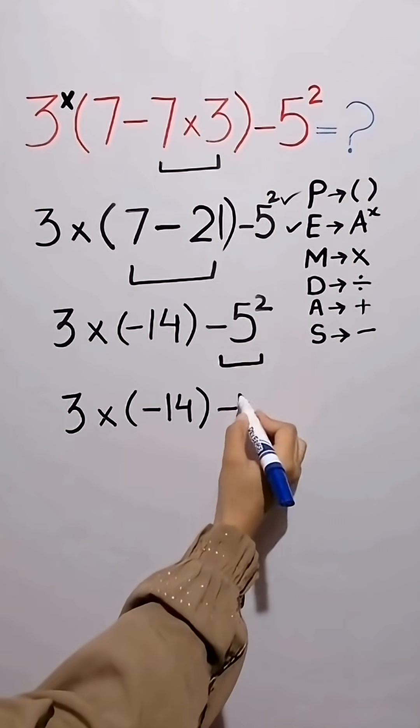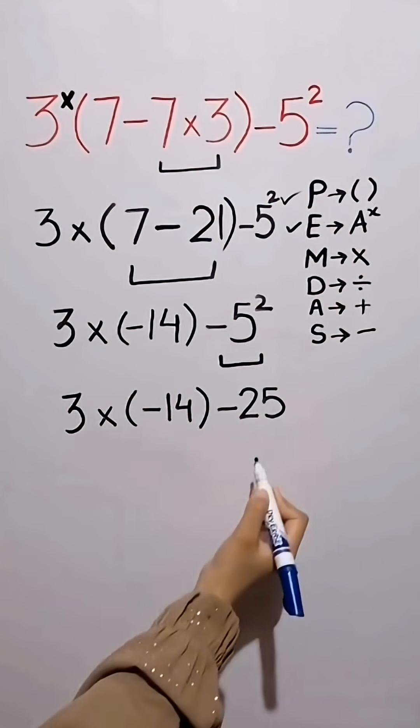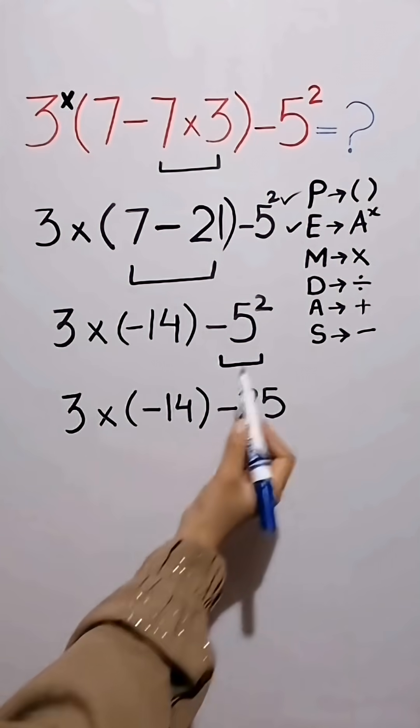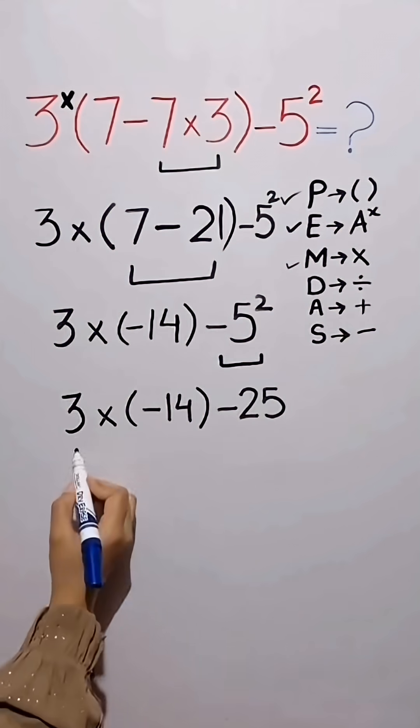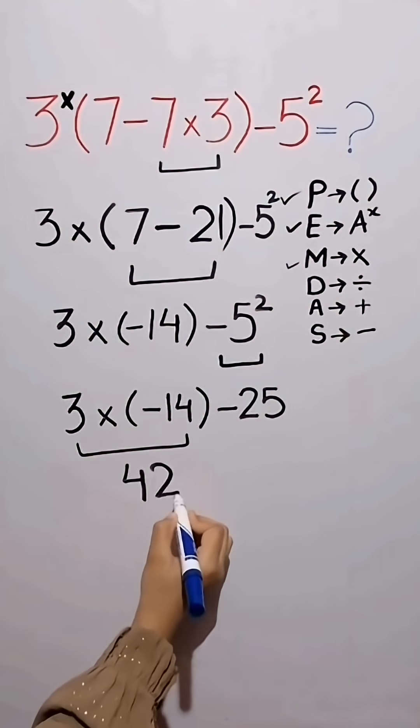5 times 5 equals 25. First we simplify this multiplication because multiplication comes before subtraction. 3 times minus 14 equals minus 42.